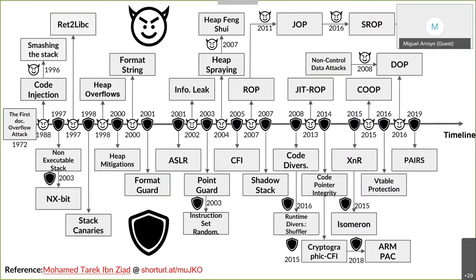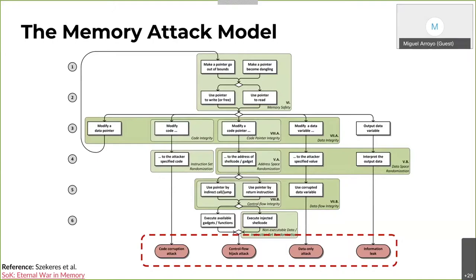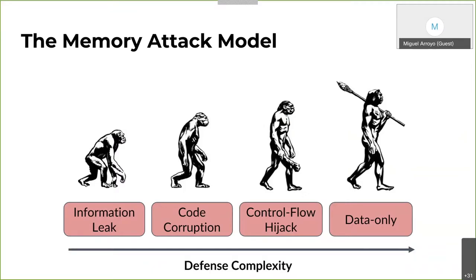To understand how attackers have managed to bypass all defense mechanisms that have been developed, we need to better understand the steps they take at a more fundamental level. This memory attack model by Szekeres et al. summarizes it — I encourage everybody to read this paper, as it's very accessible for anyone with an appreciation of security. This flow diagram describes all the different ways a memory safety issue can be leveraged by an attacker and how it leads to different classes of exploits. Unlike the underlying memory safety flaws, the sophistication required to mount these different attack categories has greatly increased. The defenses that have been adopted have actually raised the bar for the attacker.